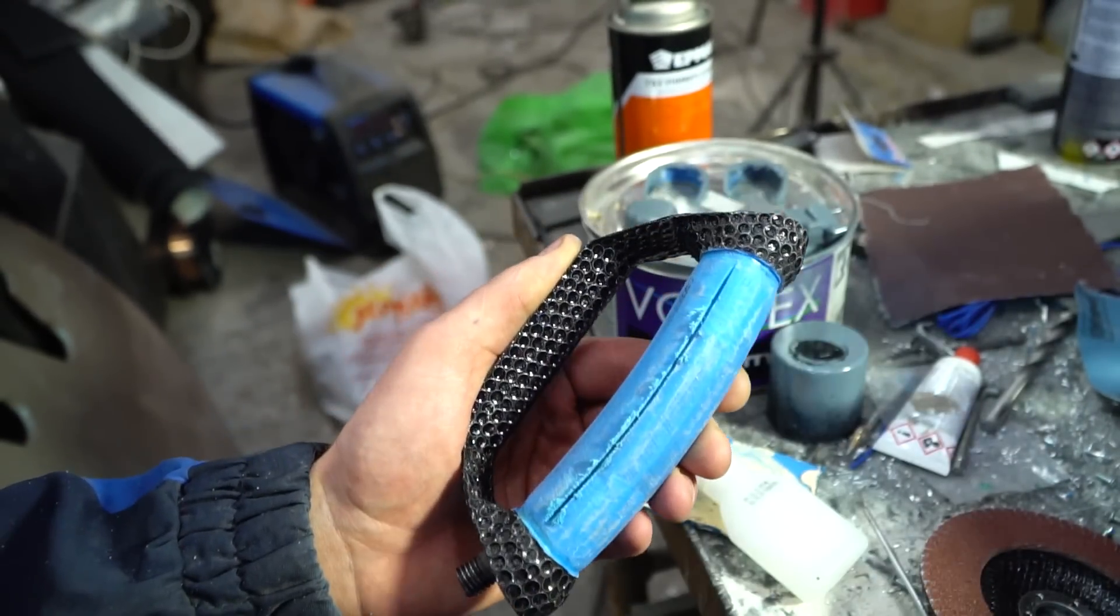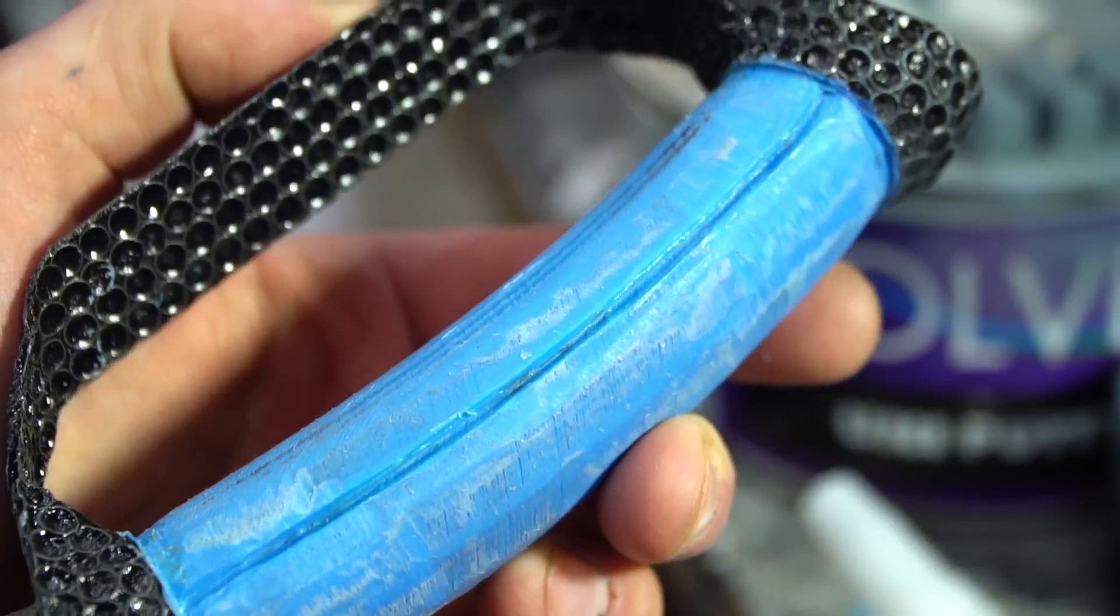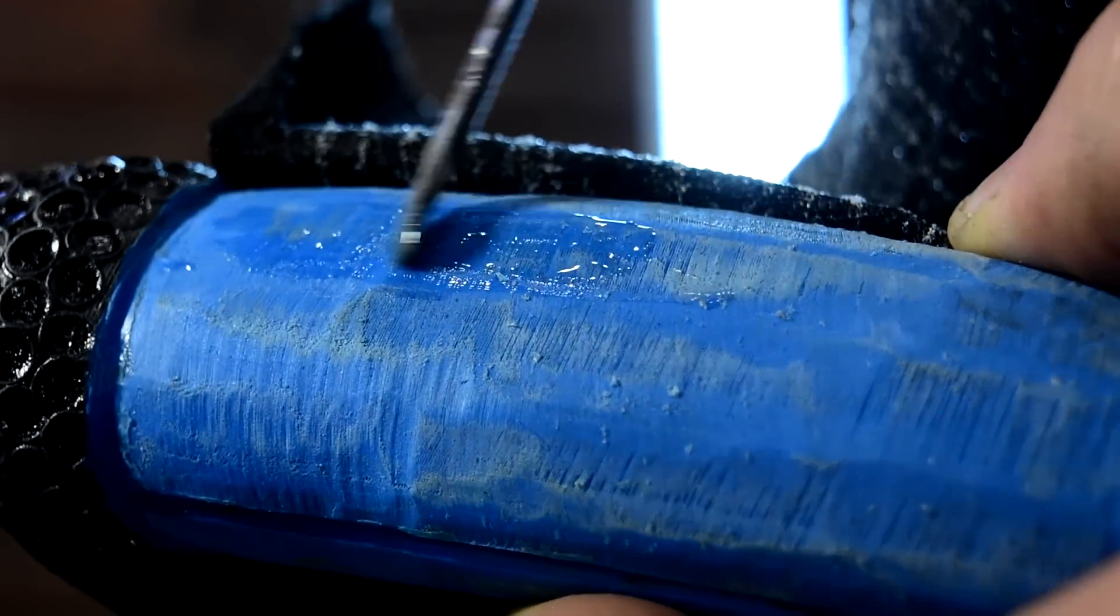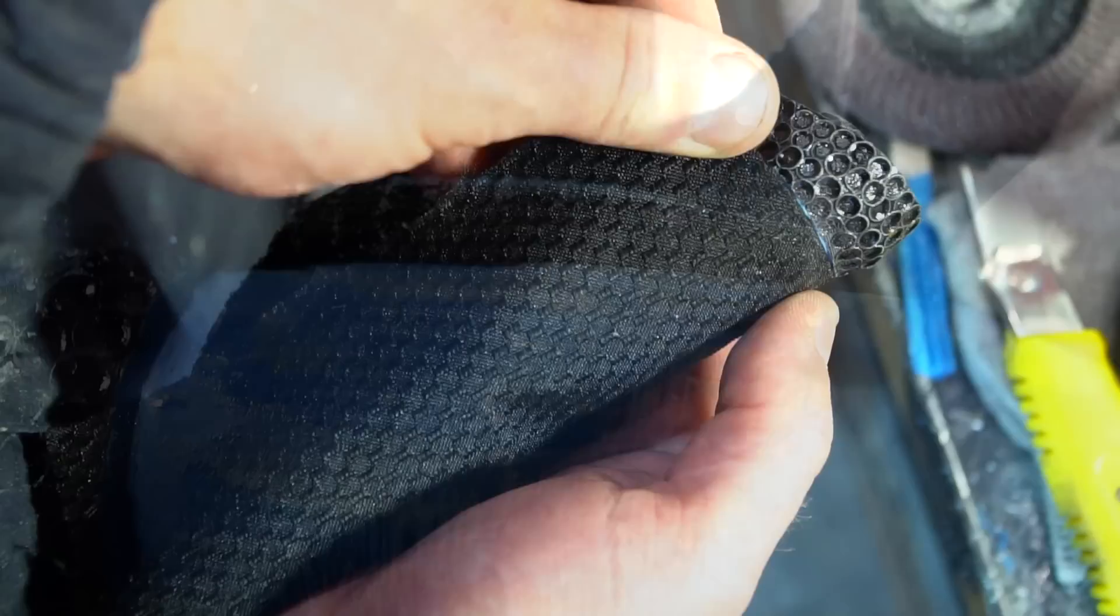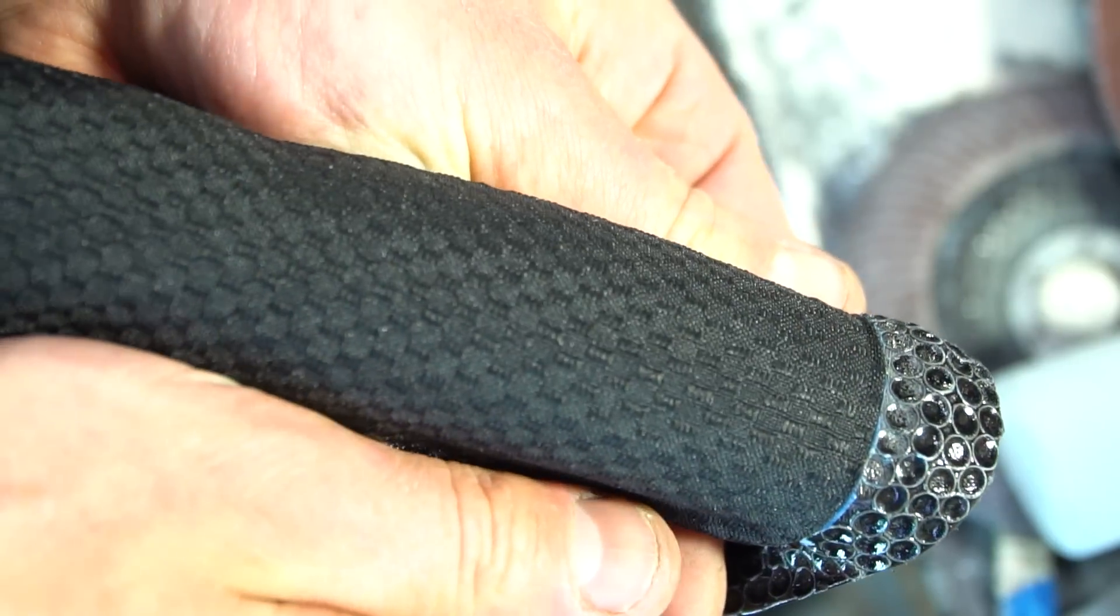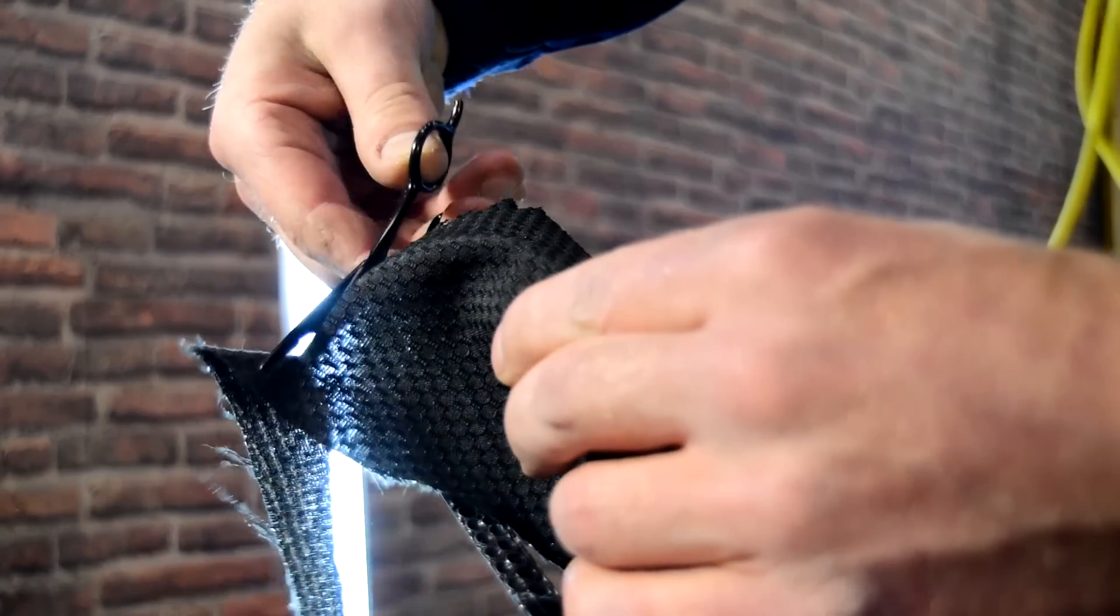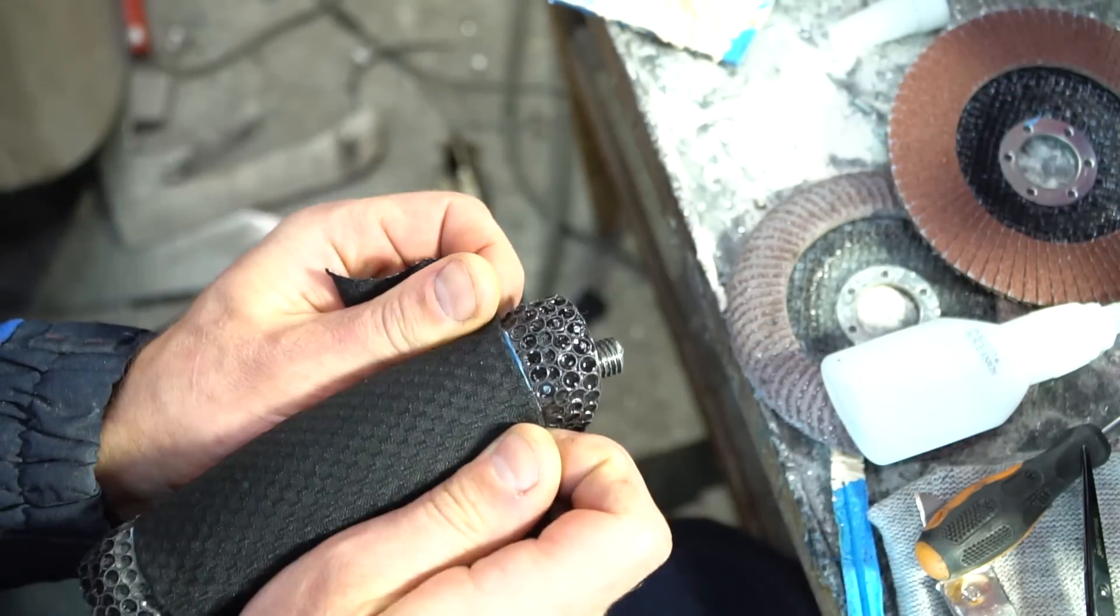I made a slot on the back of the handle. The edges of the sheath will be tucked in there. I managed to wrap the first handle on the sixth attempt, the second one on the second due to experience.